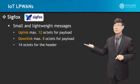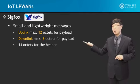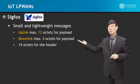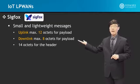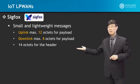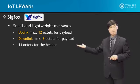The downlink has an even smaller packet size, where the payload is 8 octets, 8 bytes. And it has a 14-octet header.